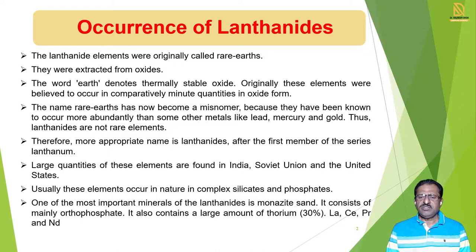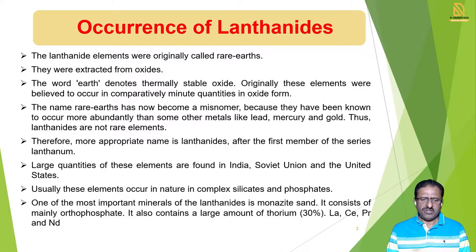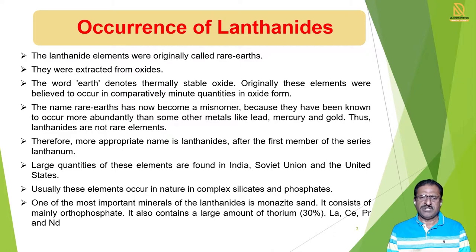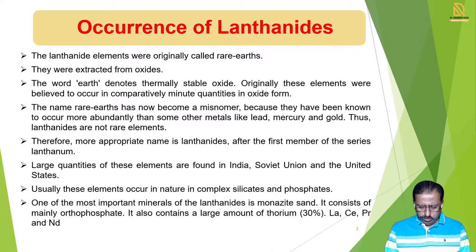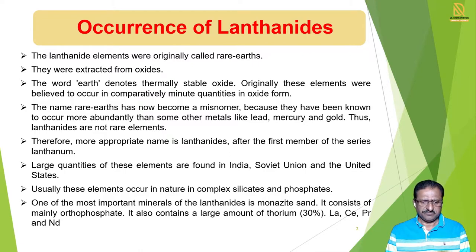So this Rare Earth name is now not used because they are present on a large scale. Instead of Rare Earth, we use the name more appropriately — that is the Lanthanides. This name is given from the first member of this series, that is Lanthanum. From Lanthanum this series is started, so all the elements have been given the name Lanthanides. These large quantities of elements are found in India, also in the Soviet Union, United States, and other countries.